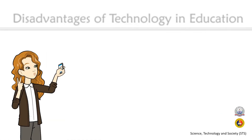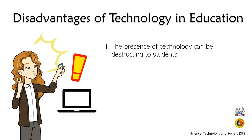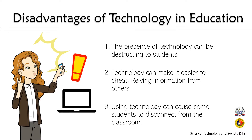As expected, there are also disadvantages of technology in education. First, technology can be distracting to students, as students are so caught up with it that time is no longer managed, affecting their learning schedule and decreasing grades. Second, technology can make it easier to cheat by relying on information from others, as students tend to cheat without anyone's knowledge. Third, using technology can cause students to disconnect from the classroom due to network interruption or slow internet signals.